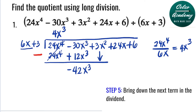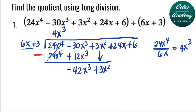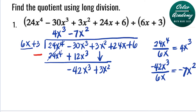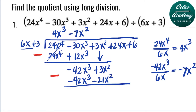We bring down 3x squared and repeat the process. We divide negative 42x cubed by 6x: negative 42 divided by 6 is negative 7, and subtracting the powers gives x squared. So the second term of the answer is negative 7x squared. Multiplying the divisor by negative 7x squared: 6x times negative 7x squared is negative 42x cubed, and 3 times negative 7x squared is negative 21x squared. Subtracting: negative 42x cubed cancels out, and 3x squared minus negative 21x squared becomes 24x squared.